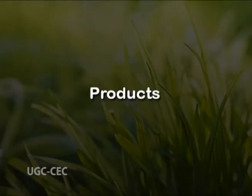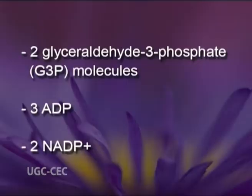The immediate products of 1 turn of the Calvin cycle are 2 glyceraldehyde 3-phosphate molecules, 3 ADP, and 2 NADP+.